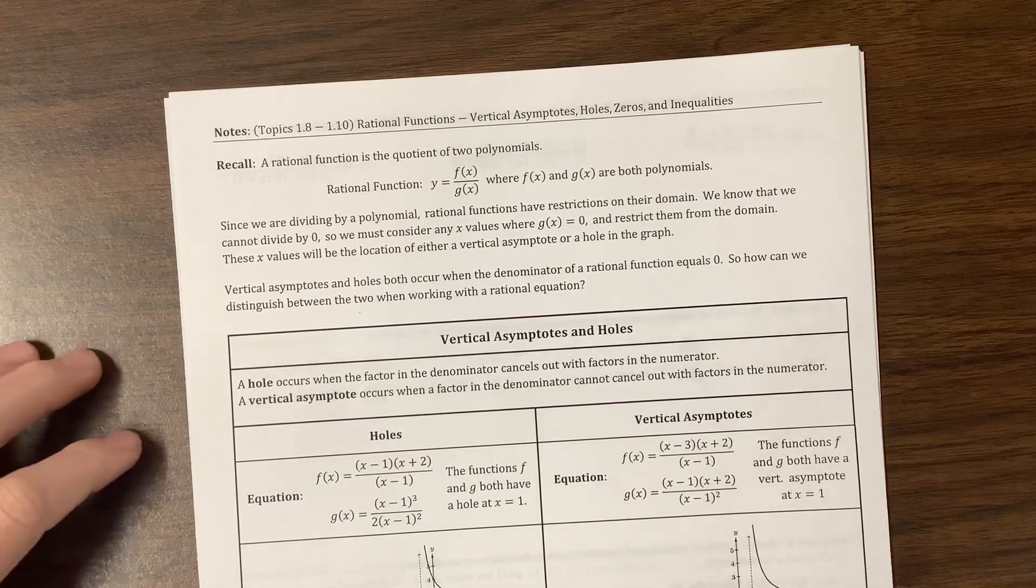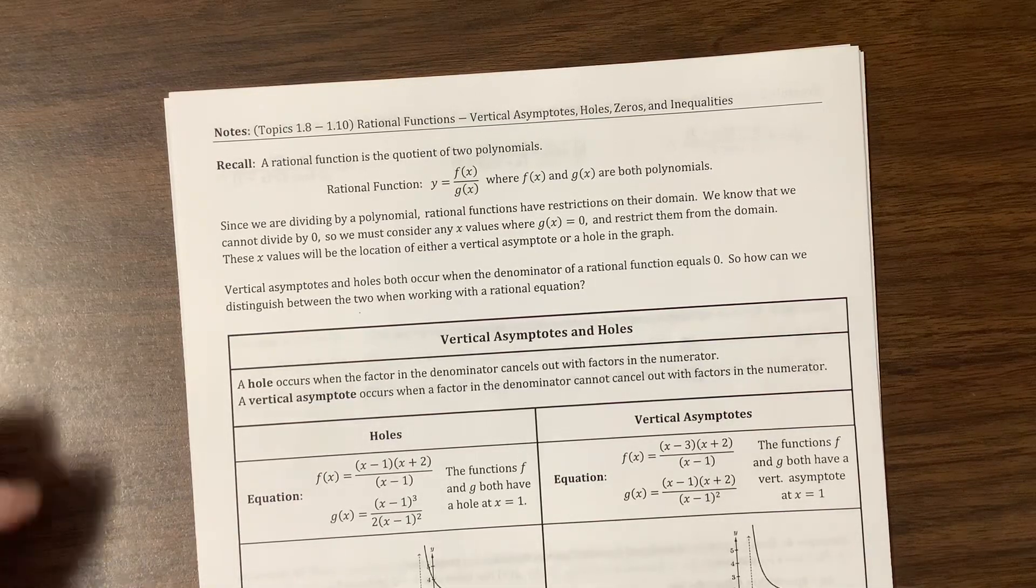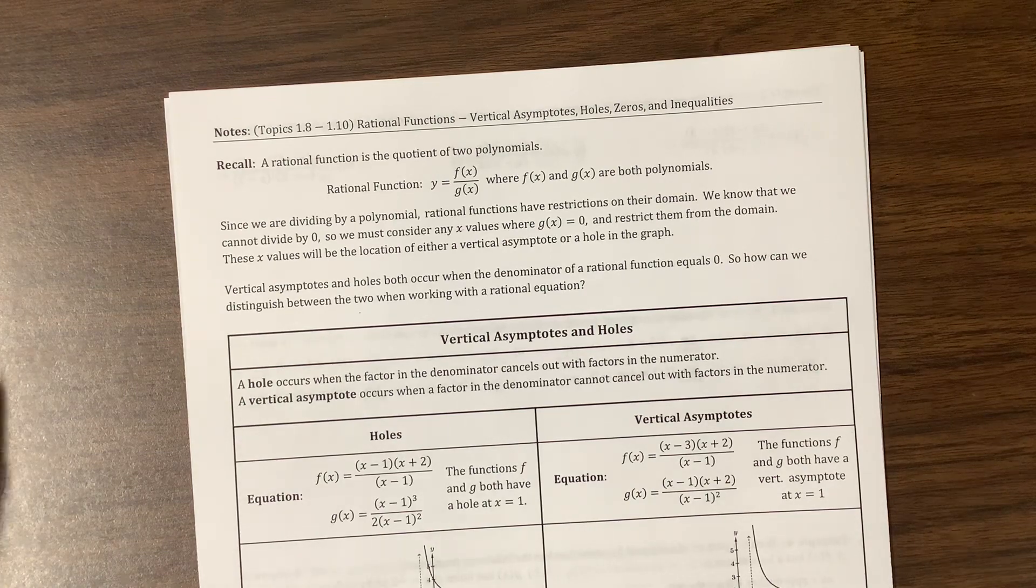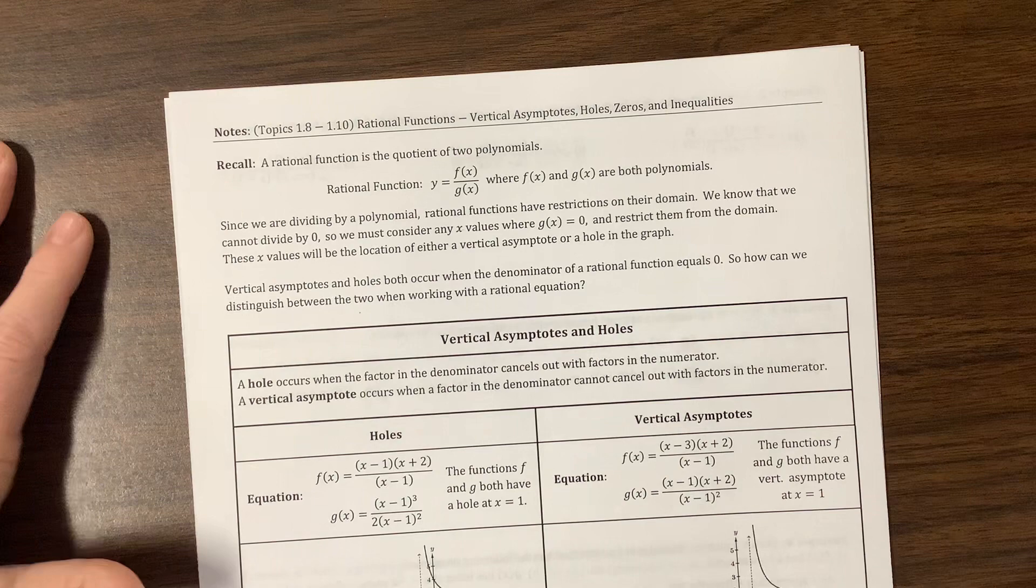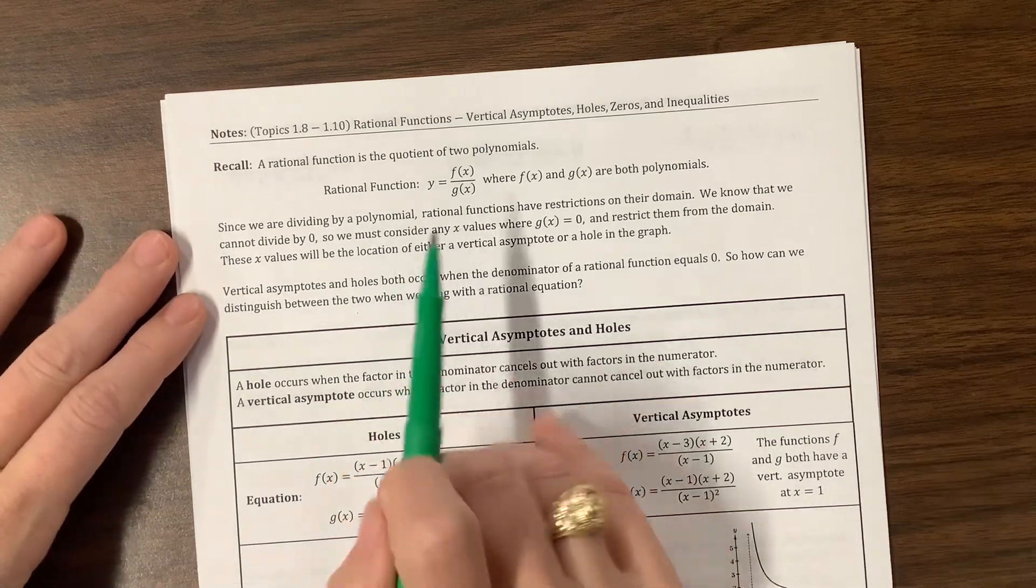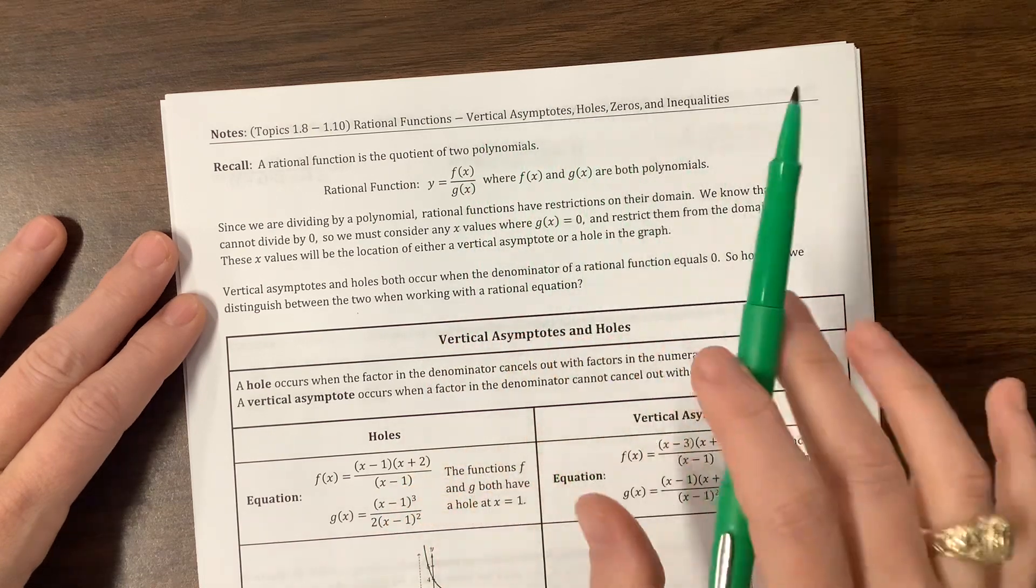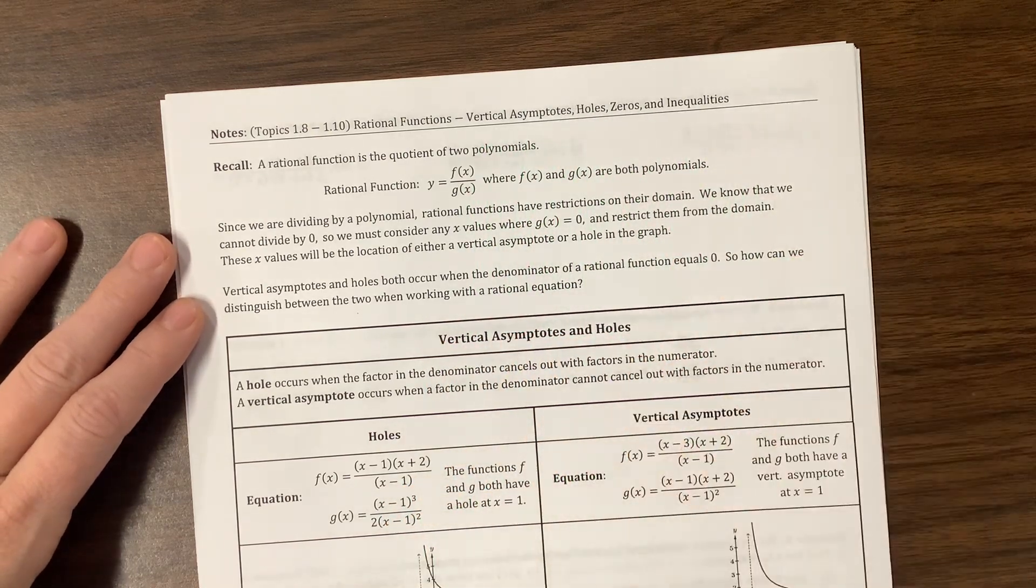Howdy AP PreCal, it's Ms. Koch. We are going to talk today about vertical asymptotes and holes. And these are things that cause us to have a restriction in our domain when we're looking at rational functions. So today we're going to do rational, we're going to do vertical asymptotes, holes, zeros, and inequalities, but we'll probably break that into a couple of videos.